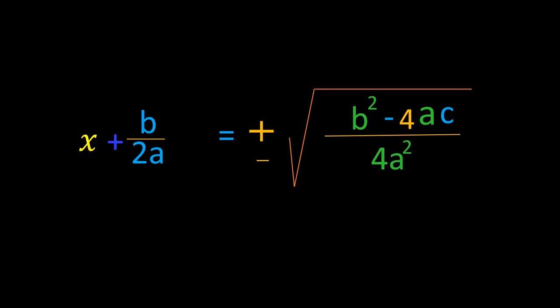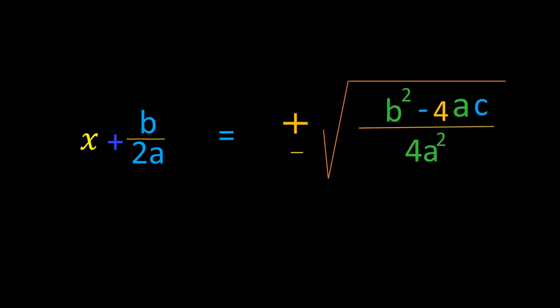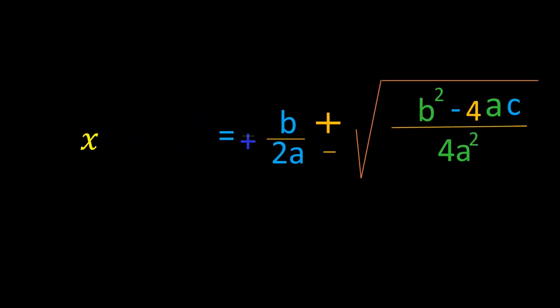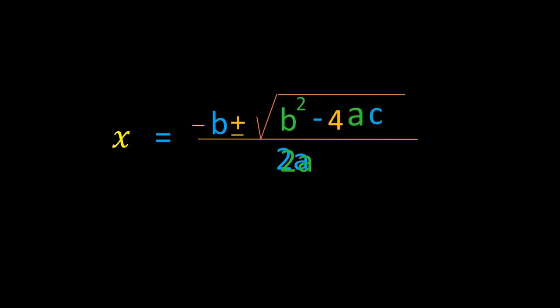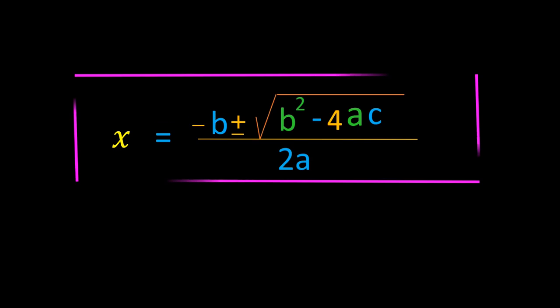On the RHS, we have plus or minus the square root of b squared minus 4ac, all divided by 4a squared. Transferring plus b over 2a to the other side, we have x equals minus b over 2a plus or minus square root of b squared minus 4ac over 4a squared. Since 4a squared in the denominator is a perfect square, taking its square root gives 2a. On simplification, we get x equals minus b plus or minus square root of b squared minus 4ac, all over 2a. This is known as the quadratic formula to find the roots of the quadratic equation.